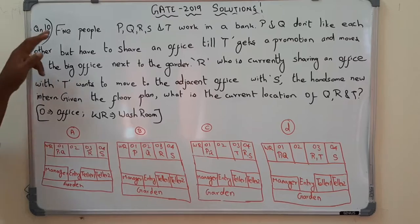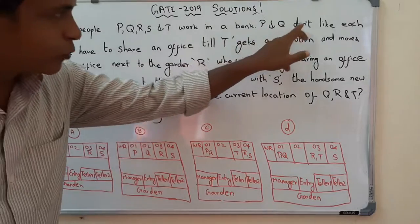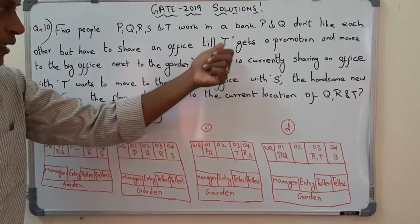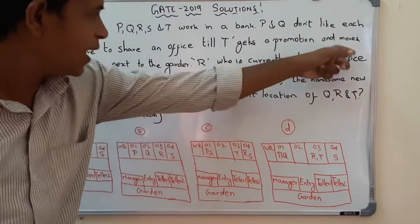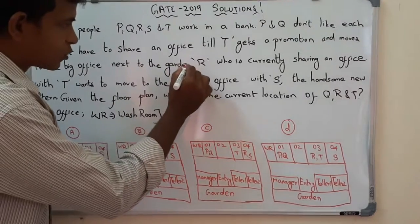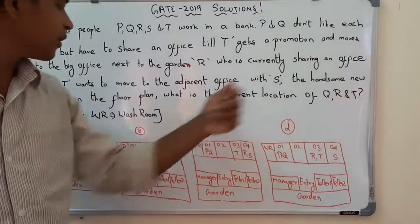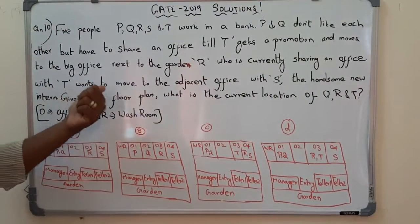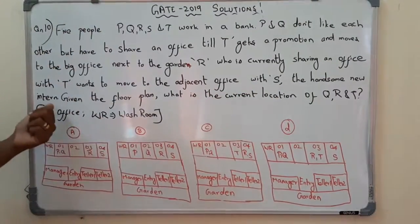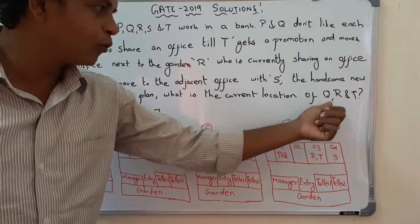Question number 10: 5 people P, Q, R, S and T work in a bank. P and Q don't like each other but have to share an office till T gets a promotion and moves to the big office next to the garden. R, who is currently sharing an office with T, wants to move to the adjacent office with S, the handsome new intern. Given the floor plan, what is the current location of Q, R and T?